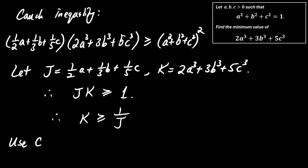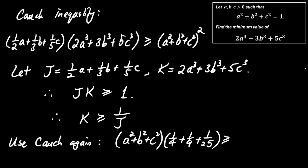Let's estimate the upper bound of J using Cauchy again. J squared is less than or equal to a squared plus b squared plus c squared multiplied by 1 quarter plus 1 ninth plus 1 over 25.